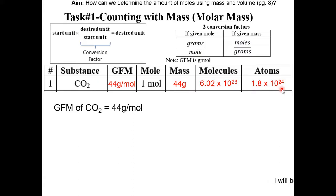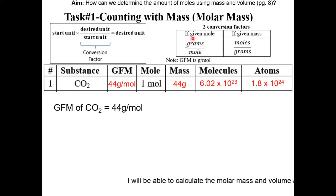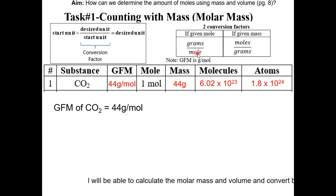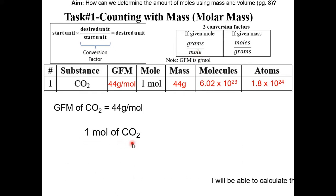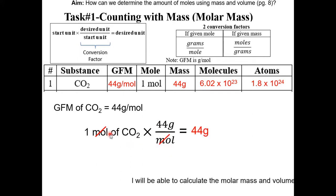You can also figure out the mass using a conversion factor and the equation. Start unit times desired over start gives you the desired unit. Since we're given one mole, we use this conversion factor with mole in the denominator. One mole of CO2 times 44 grams per mole gives you 44 grams — the mole cancels out.